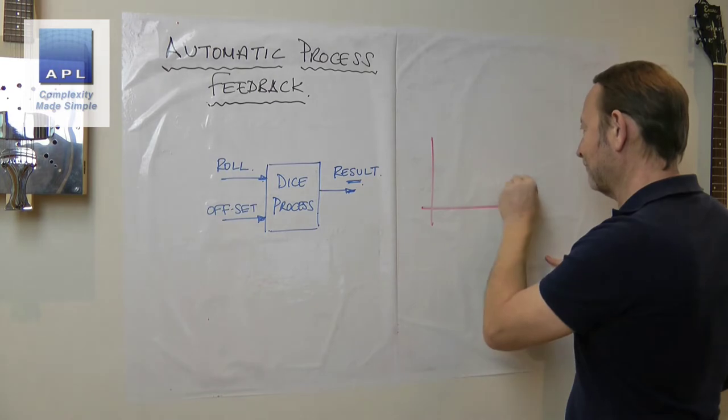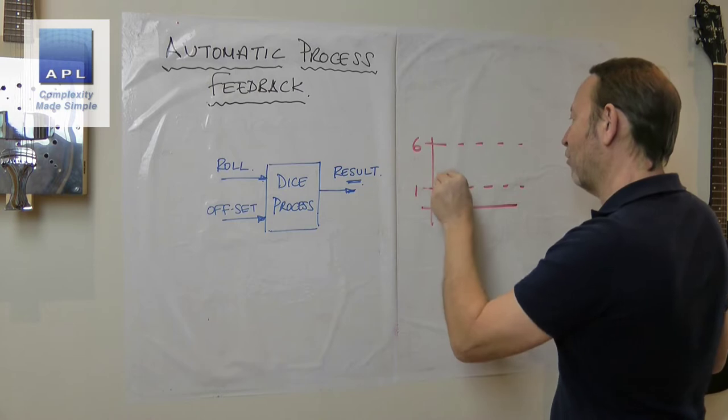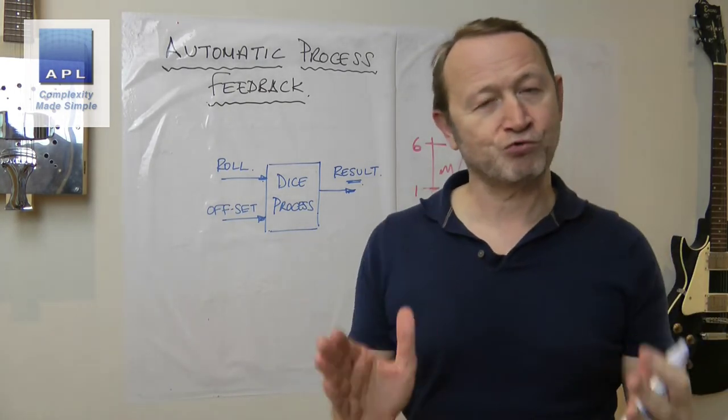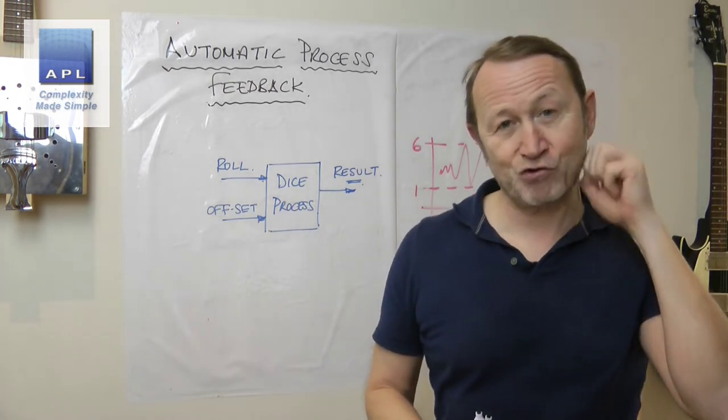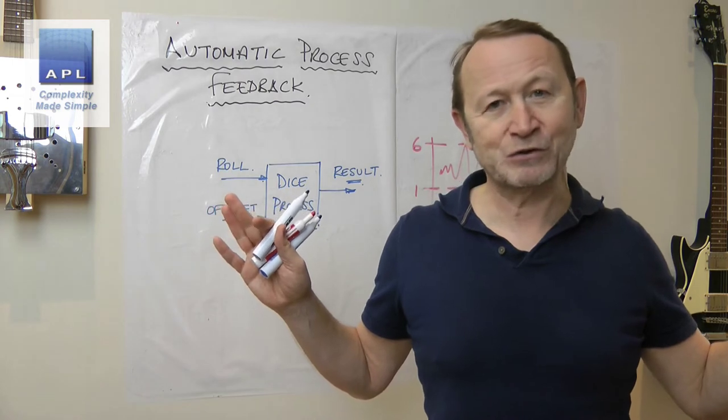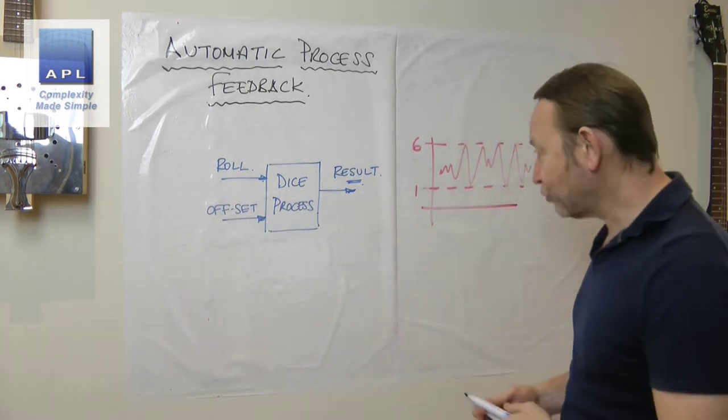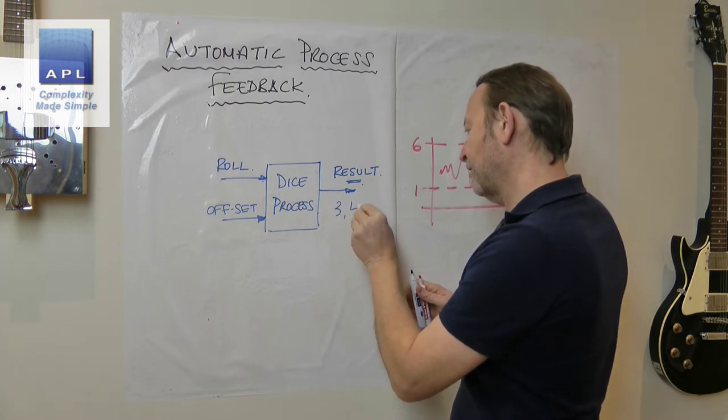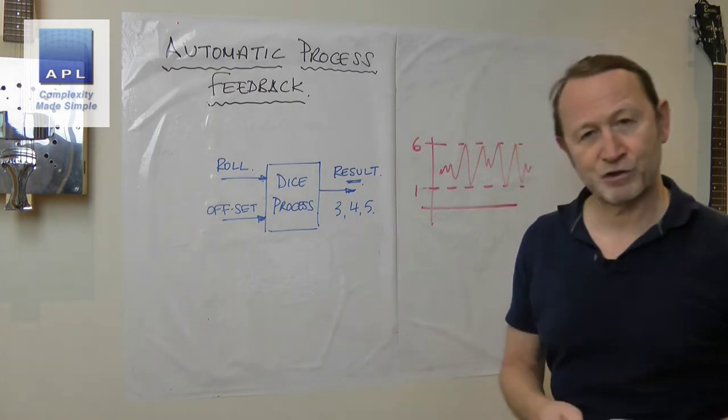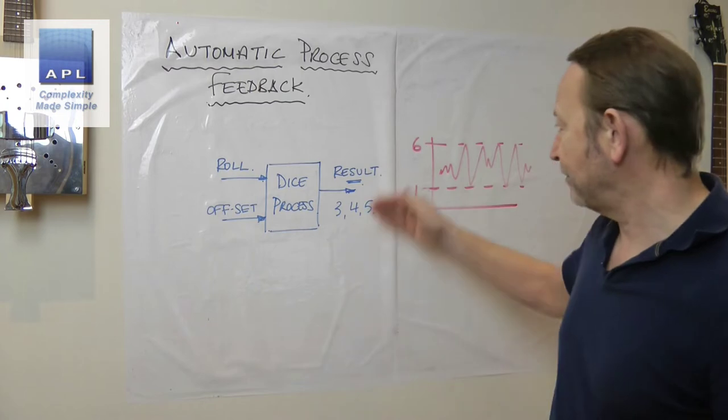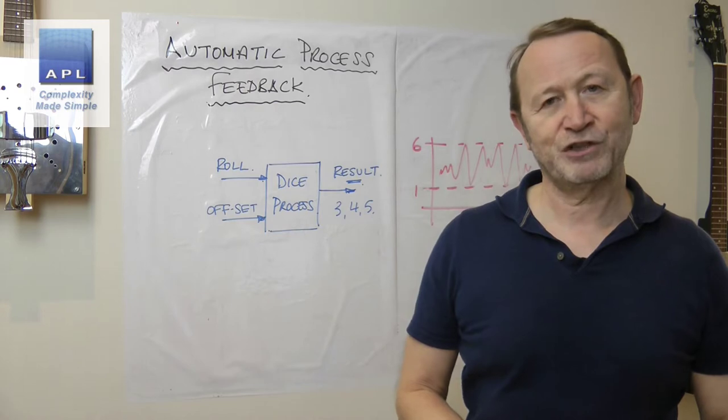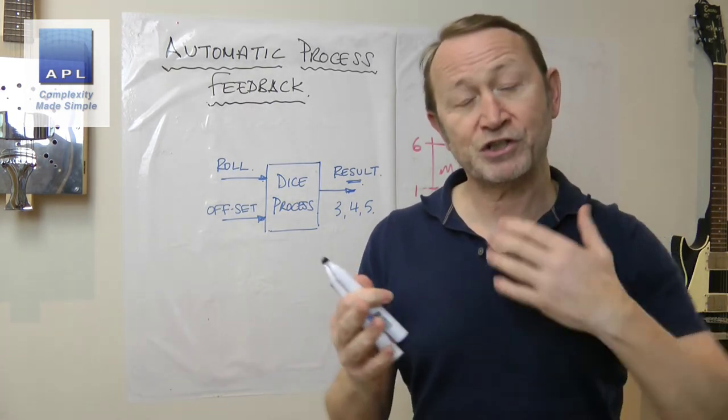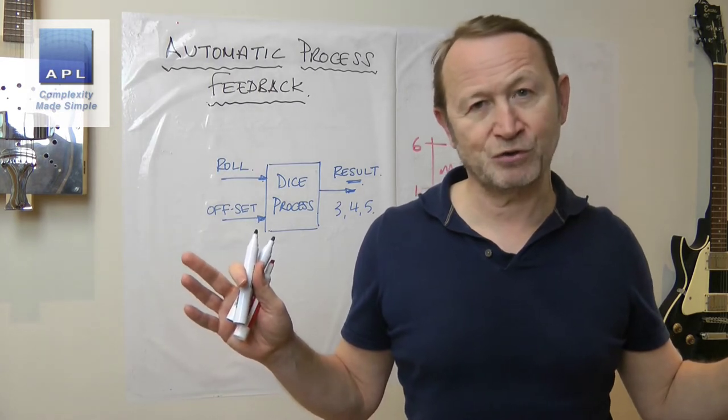So here we are, we get a result. Now the reason I use a dice is because we know what a dice is going to do. We know what it does—it's a random number generator. You know, the process typically is going to have boundaries one and six. It's going to bounce around within that window and we know that. We know what's right about the dice. So whilst the dice is doing its natural thing, we would naturally leave it alone. We wouldn't touch it at all.